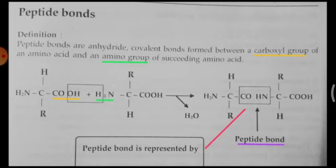The OH of COOH and H of NH2 are going to combine to form water, which is released — you can see this below the arrow. And the rest, CO and NH, are going to form the peptide bond. This is how a peptide bond is formed between two amino acids.